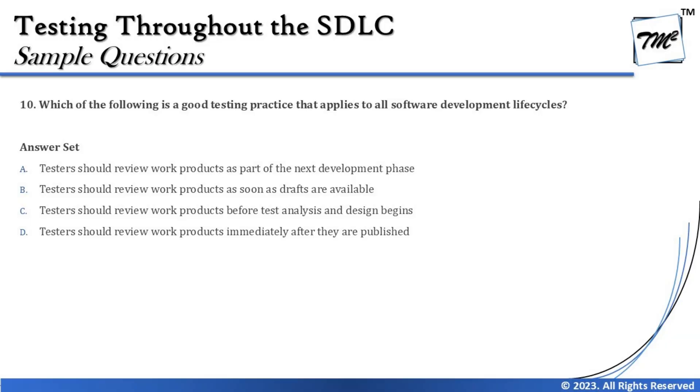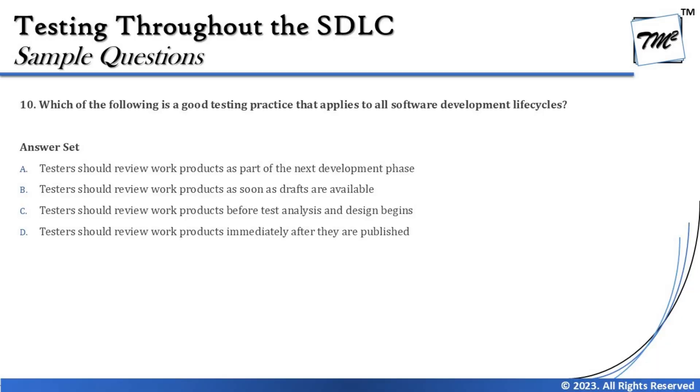Moving to question number 10: which of the following is a good testing practice that applies to all SDLC life cycles? Remember the four golden rules: for every development activity there should be a corresponding testing activity; every test level must have an objective specific to that level; analysis and design can start alongside the corresponding development activity; and testers should be involved in reviewing drafts as soon as possible. Option A says testers should review work products as part of the next development phase — that's not one of the four characteristics.